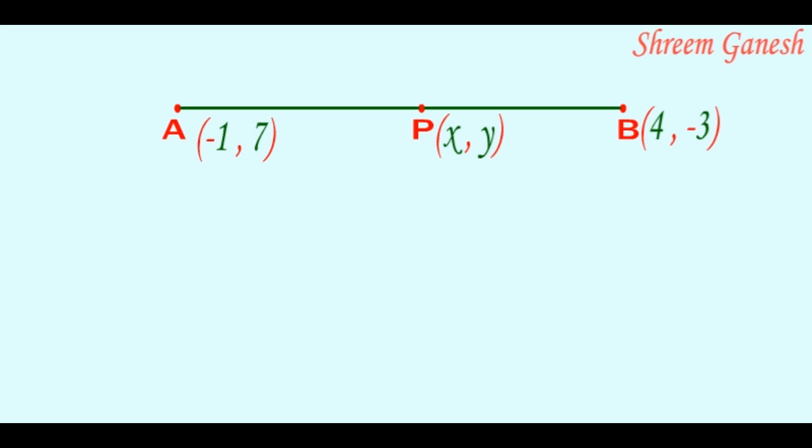We are given that this point P is dividing the line segment in the ratio 2:3, and we are to find the coordinates of point P. It can be done using the section formula.